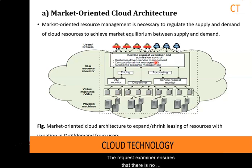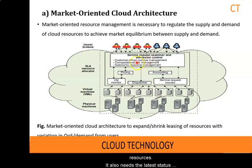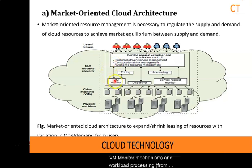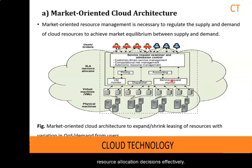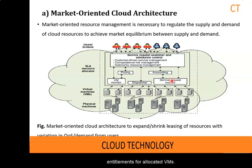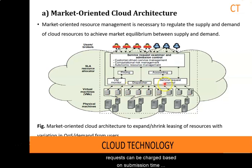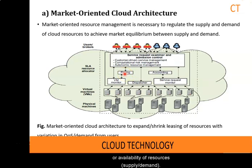The request examiner ensures there is no overloading of resources whereby many service requests cannot be fulfilled successfully due to limited resources. It also needs the latest status information regarding resource availability from the VM monitor mechanism, and workload processing from the service request monitoring mechanism. In order to make resource allocation decisions effectively, it assigns requests to virtual machines and determines resource entitlement for allocated virtual machines. The pricing mechanism decides how service requests are charged — for instance, based on submission time, pricing rates, or availability of resources.